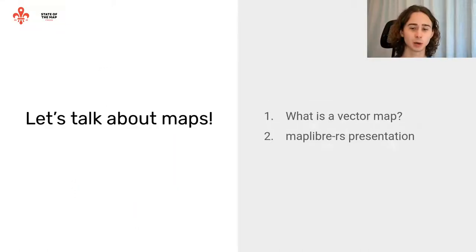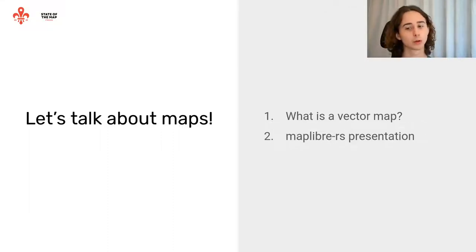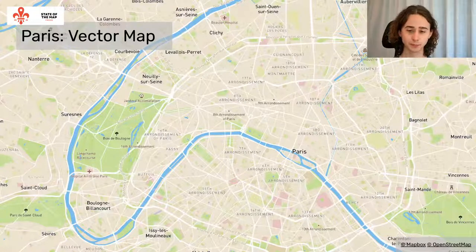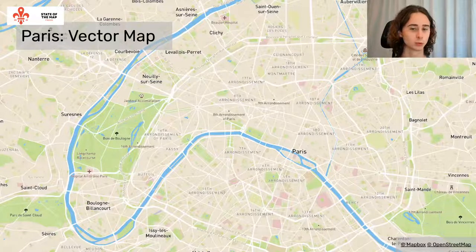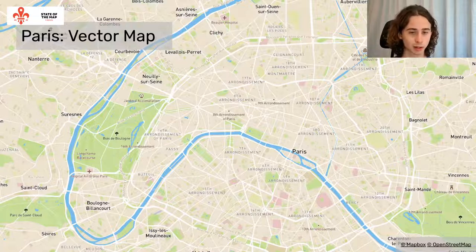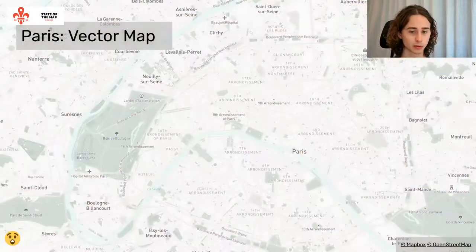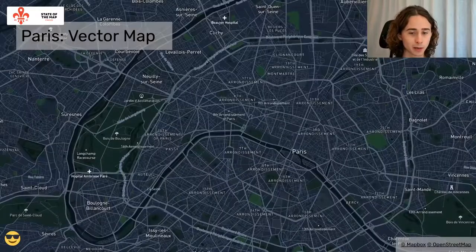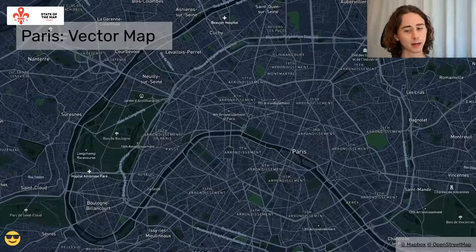Let's talk about maps. I want to briefly discuss what a vector map is so we're all on the same page. Here is MapLibre RS — it's a vector map of Paris. What we can do with vector maps is dynamically style them on the client. The same map with a different style can look completely different, for example switching to a night mode when it gets dark while driving.